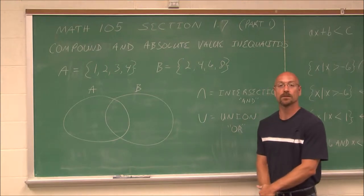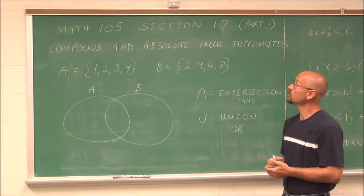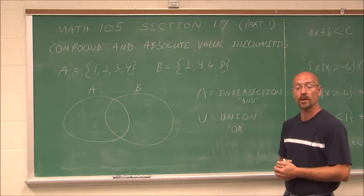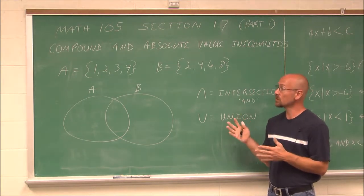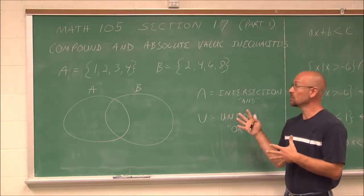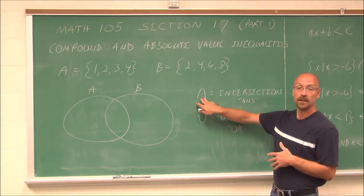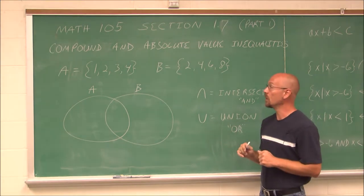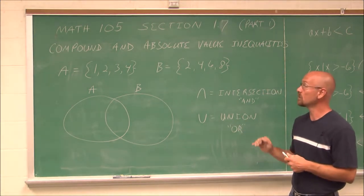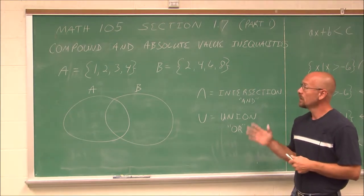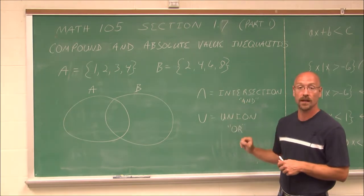Hello, and welcome to Bay College's video lectures for Math 105, Intermediate Algebra. In this video, we're going to look at Section 1.7. Section 1.7 is broken into three separate videos. In the first one, we're going to look at absolute values in compound inequalities in terms of intersections. Part two, we'll look at unions. And the third part, we'll look at absolute value inequalities. So the first thing we're going to do is define the difference between an intersection and a union.